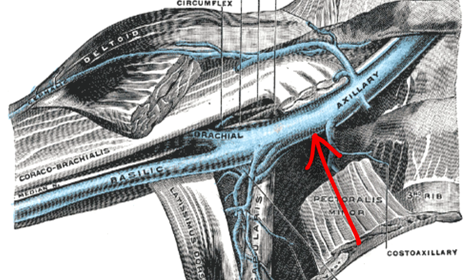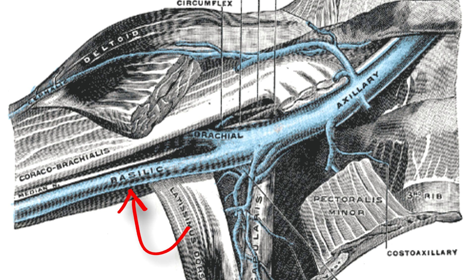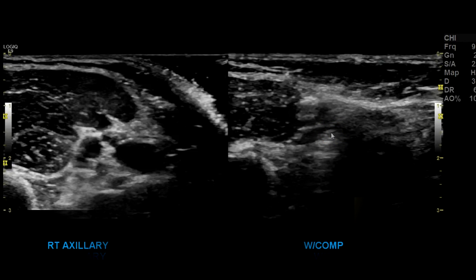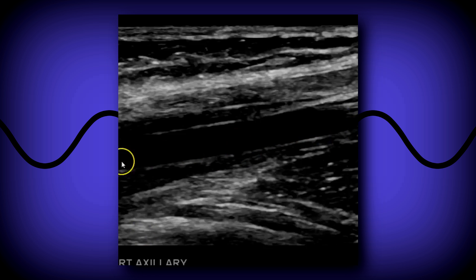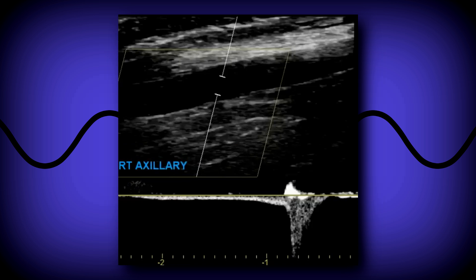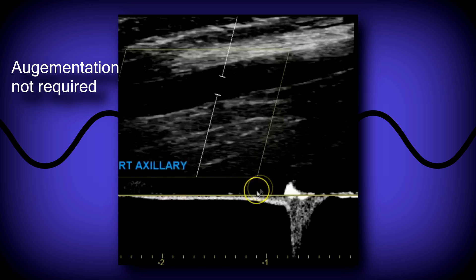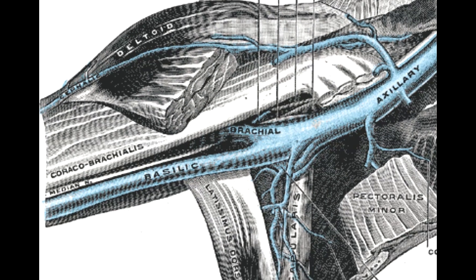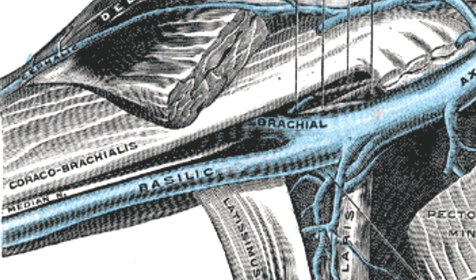After the subclavian you have the axillary vein. Here's the axillary vein bifurcating into the brachial, which goes deep, and the basilic vein, which is a superficial vein commonly used for PICC line insertions. Here's your axillary artery and vein collapsing in the sagittal view, then with color and Doppler, and a distal augmentation.